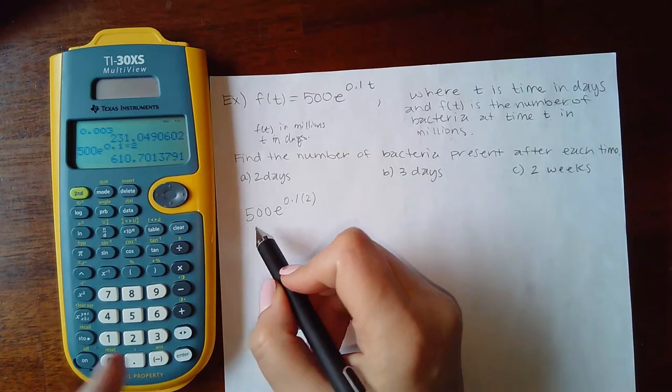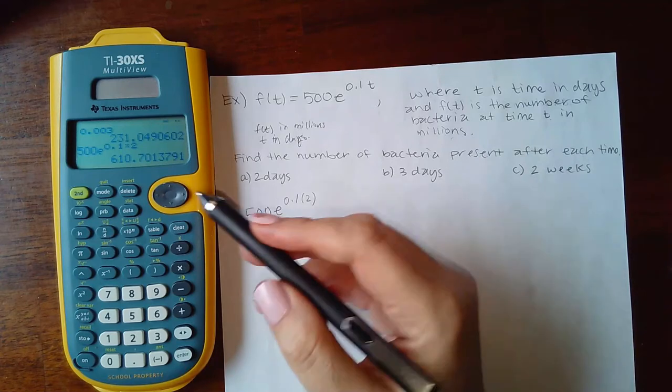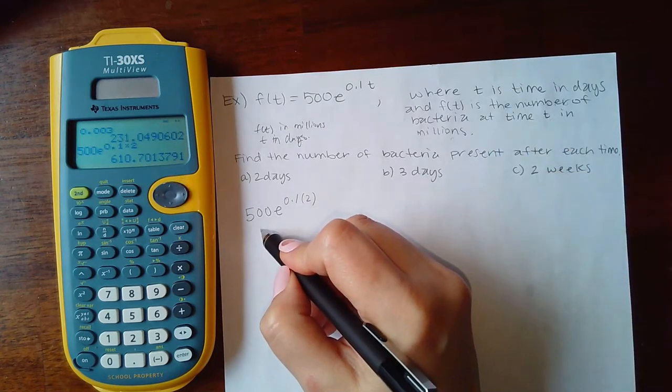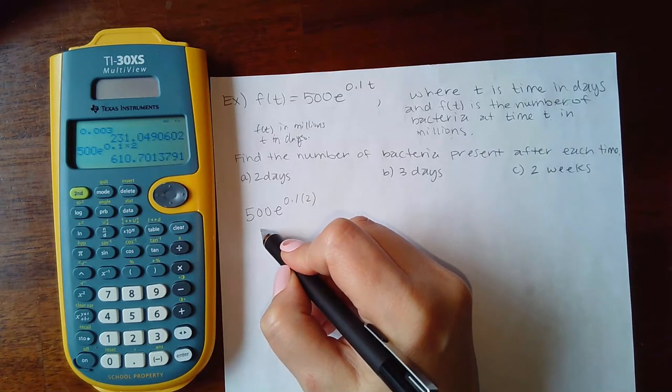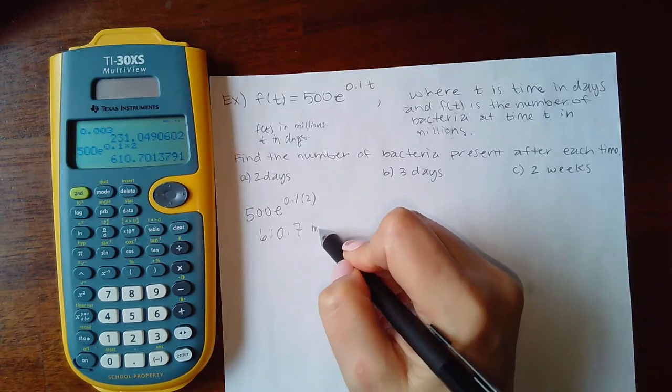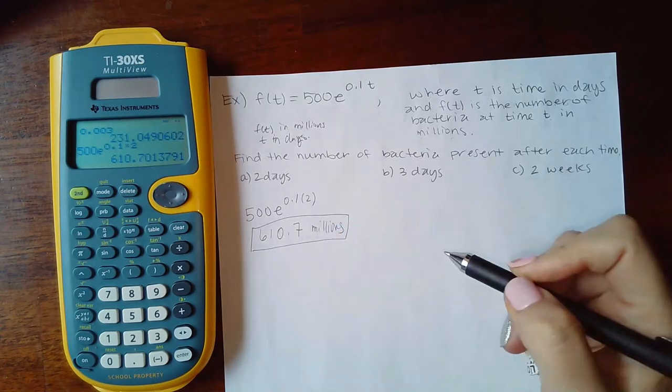And normally they make you round to the nearest a certain decimal, so I'm just going to round to the tenth place because it doesn't tell me exactly what to round to, but in math labs it will tell you what to round to, so pay attention to that detail. I'm going to say 610.7 millions, right? That's how many bacteria present after two days.